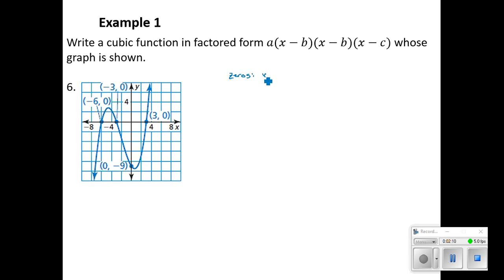Our zeros are x equals negative 6, x equals negative 3, and x equals positive 3. We also have an additional point, the point (0, -9).